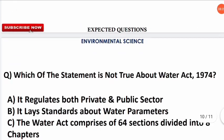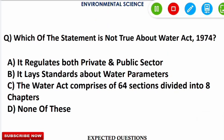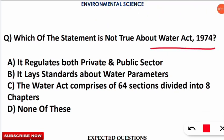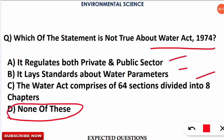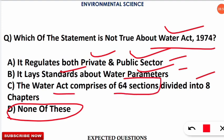The next question asks which statement is NOT true about the Water Act of 1974. The correct answer is option D — 'none of these,' meaning all three statements are correct. As per the Water Act 1974, the CPCB and state pollution control boards regulate both private and public sectors, lay down water quality standards for agriculture and drinking purposes, and the Act comprises 64 sections divided into 8 chapters.